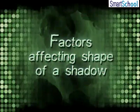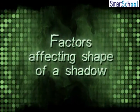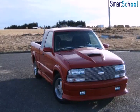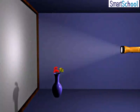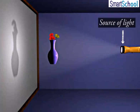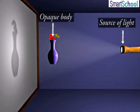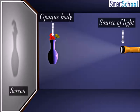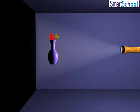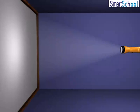Factors affecting shape of a shadow. We have learnt about formation of a shadow. To make a shadow, three things are needed: the first thing is source of light, the second is an opaque body, and the third is a screen. We cannot get a shadow if any one of these three is absent.